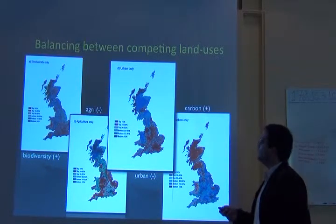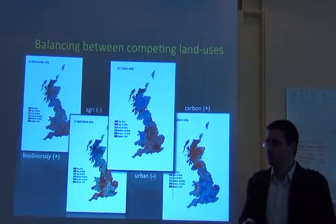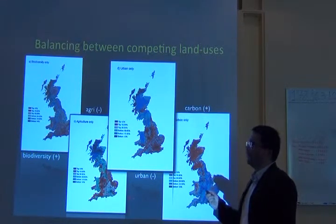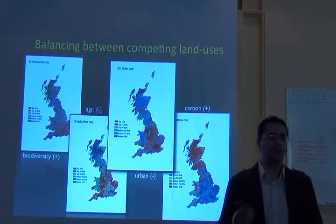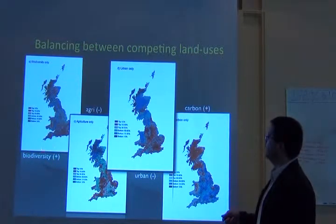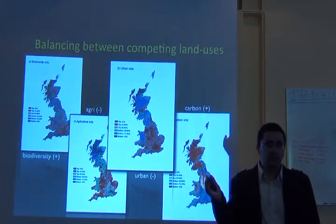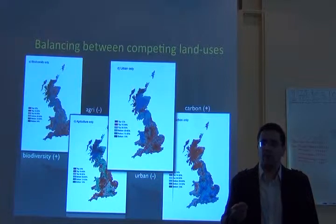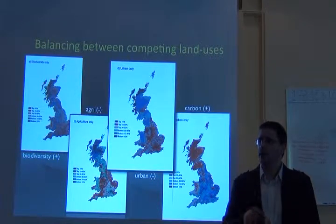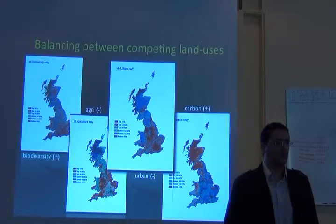How do you do that if Zonation only allows one cost value? Before version 3, you could combine all competing values into a single unique value representing all land uses — standardized with Z-scores, as Tiago explained yesterday, or by running a principal component analysis and using the first or second axis as a cost.